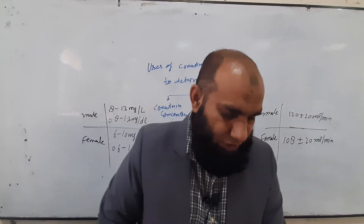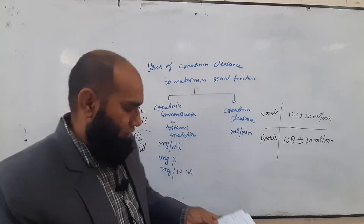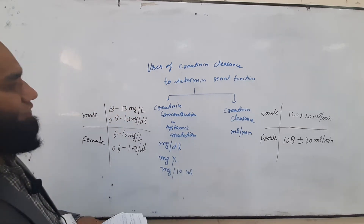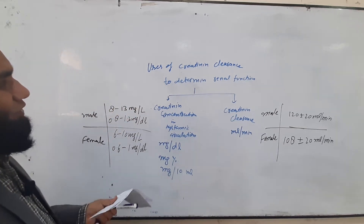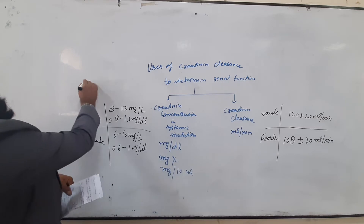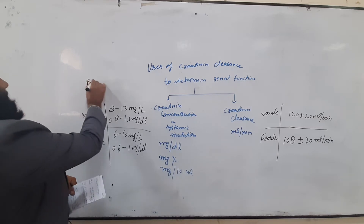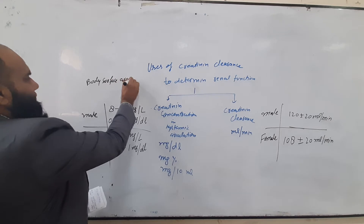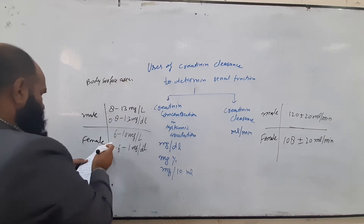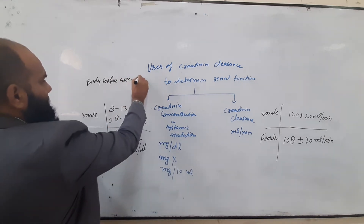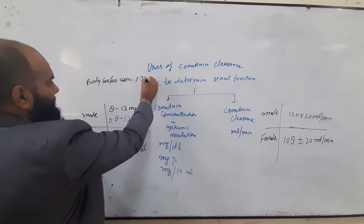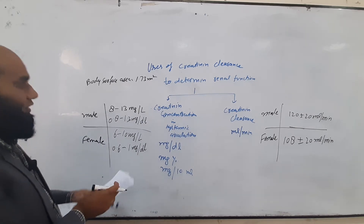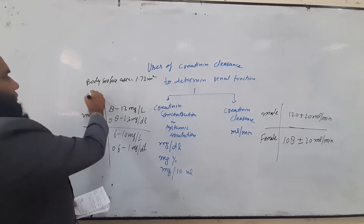There are many drugs whose doses should be adjusted when differences in creatinine values or creatinine clearance are found. In our calculations, we will write the body surface area, and this body surface area in our formulas will be 1.73 meters squared. We will use the term nomogram.